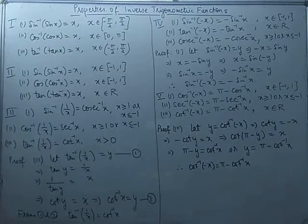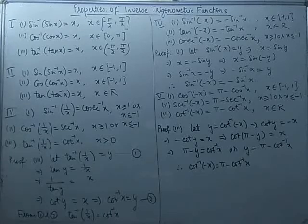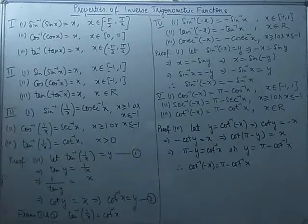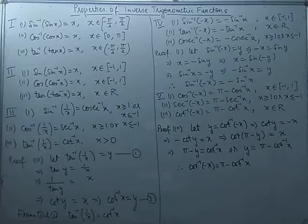The same property holds for the remaining three functions as well: cosec⁻¹(cosec x) = x, sec⁻¹(sec x) = x, and cot⁻¹(cot x) = x. I will be writing it for three of the functions, but it holds for the remaining three as well.